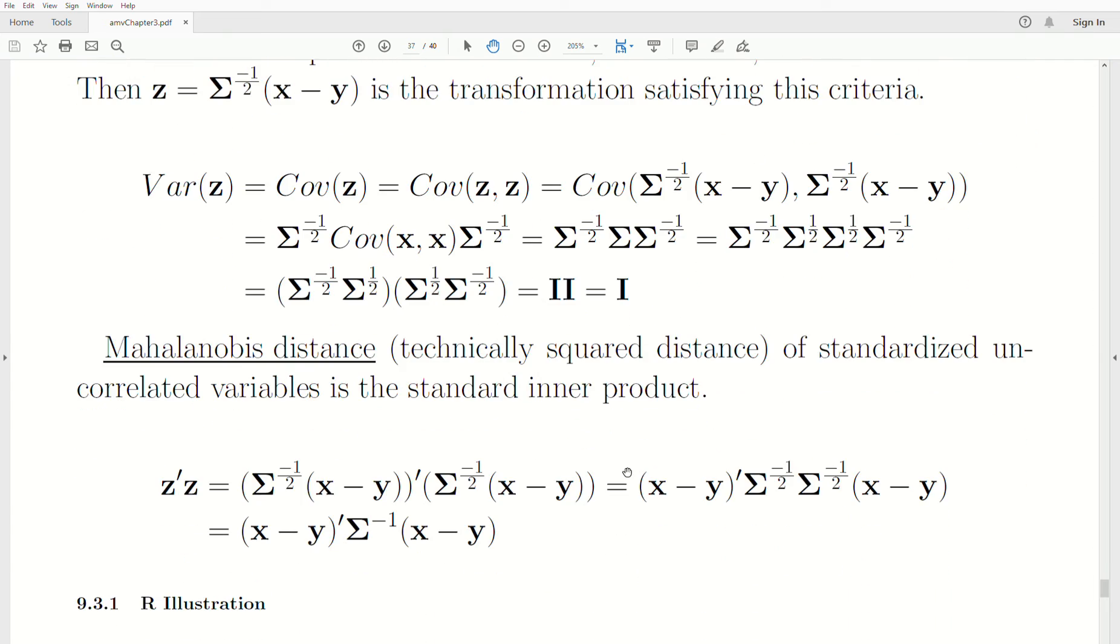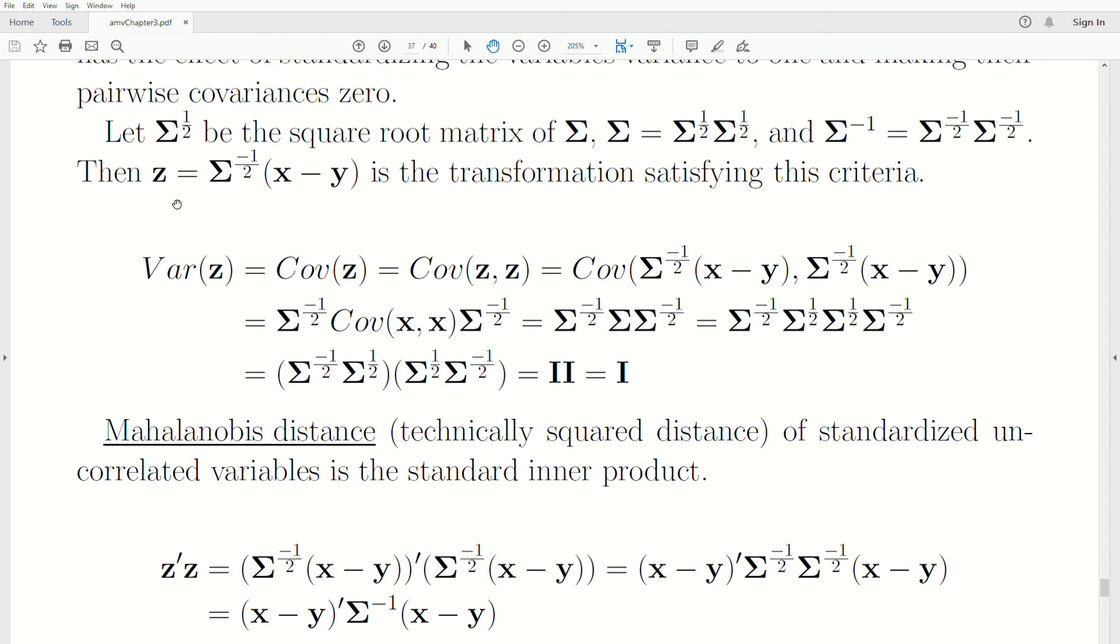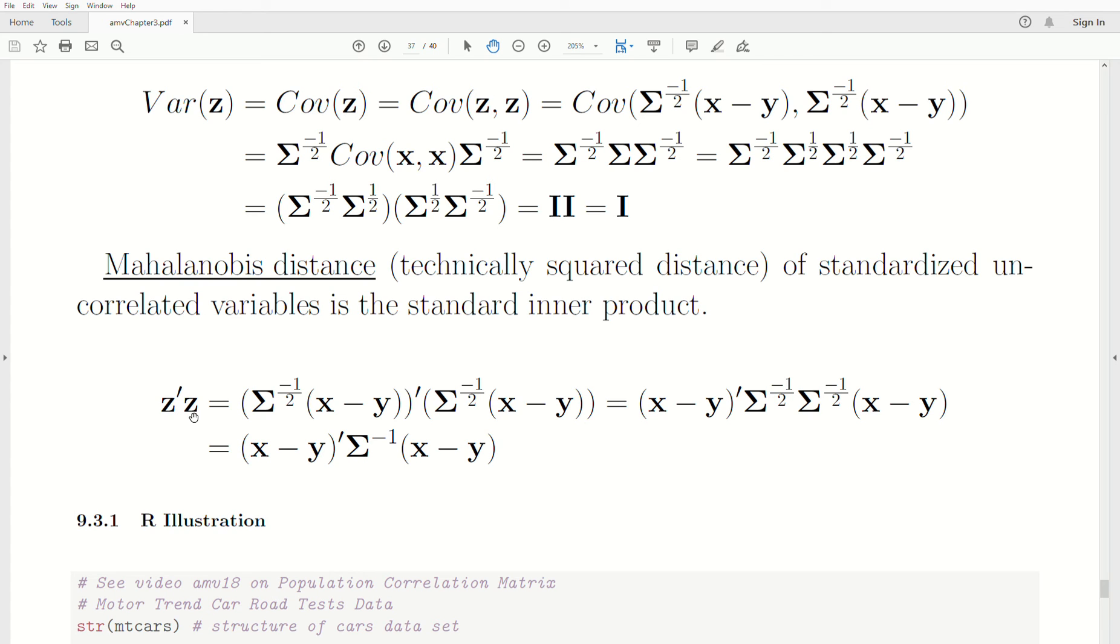Now, Mahalanobis distance of standardized uncorrelated variables is the standard inner product. It's technically squared distance, but if we now take this transformed variable, which covariance is zero and all the variances are the same, Mahalanobis distance really is equal to the standard inner product for the length of a vector, which is z transpose z. But now let's put in what z is in both of these cases. Let's distribute the transpose, which reverses these matrices and vectors. So that's why we get x minus y transpose. And this should be Σ^(-1/2) transpose, but it's symmetric. So it doesn't change it. And so this is the inverse of the covariance matrix. And so this is Mahalanobis distance that we discussed earlier.